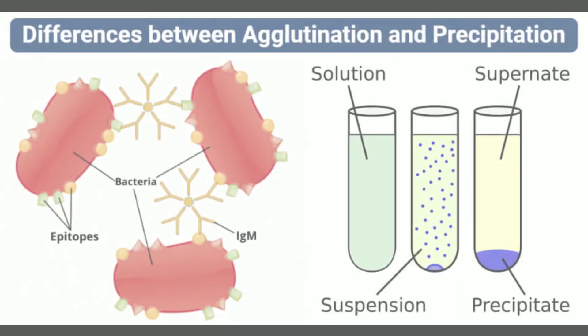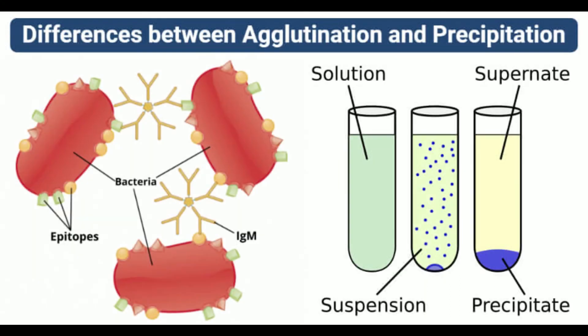Agglutinates usually settle towards the bottom of the container, while precipitants might either remain suspended or settle down. In flocculation, the flocculants float on the surface of the liquid matrix. The starting molecules in agglutination are particles, while in precipitation they are ions. Agglutination reactions are surface reactions requiring exposed antigen surfaces for antibody binding, while precipitation requires equal concentrations of antigen and antibody.